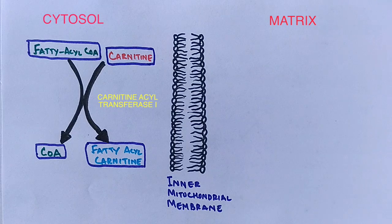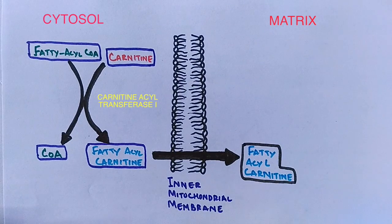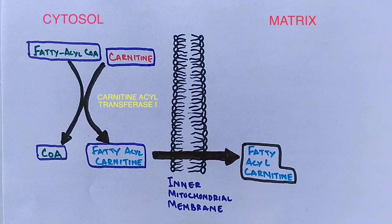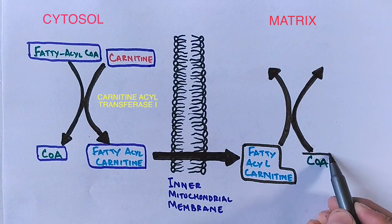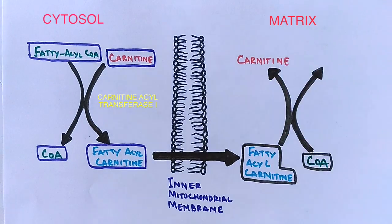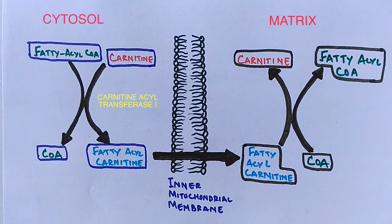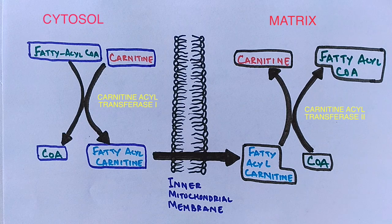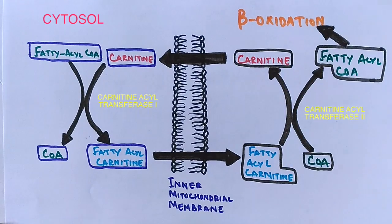Now the fatty acyl group is bound to carnitine, so it easily passes through the inner mitochondrial membrane and gets into the matrix. In order to carry out fatty acid oxidation, we need the fatty acid bound to coenzyme A again — that is, in its original activated form as in the cytosol. So here in the matrix, fatty acyl carnitine reacts with a CoA molecule, releases the carnitine back, and finally we get fatty acyl-CoA. This reaction is catalyzed by the enzyme carnitine acyl transferase 2. The carnitine molecule goes back to the cytosol to continue the same set of reactions, while beta oxidation of fatty acyl-CoA occurs in the matrix.